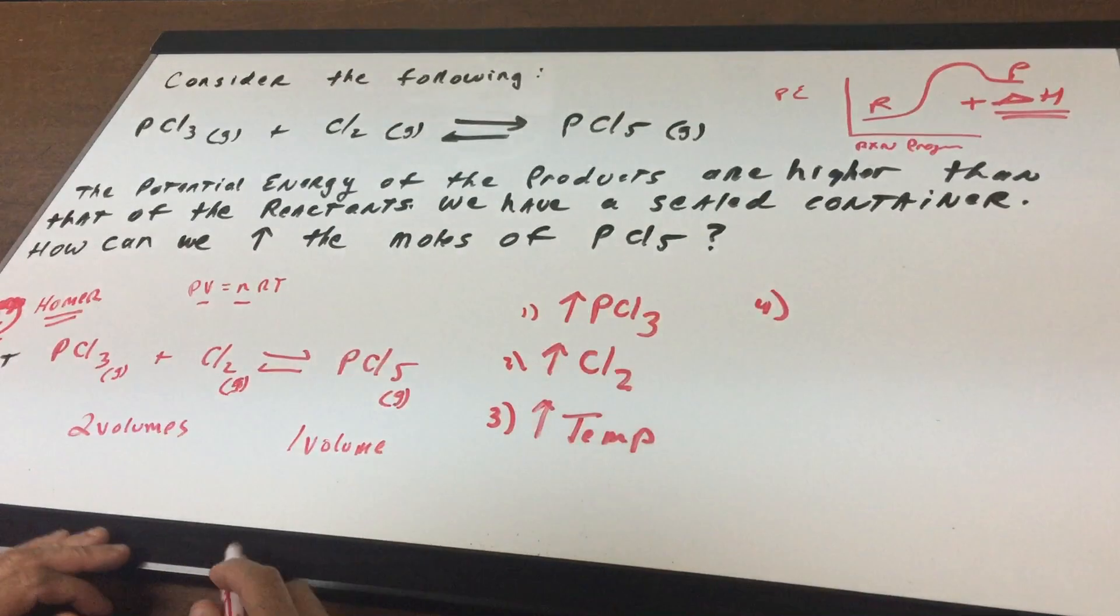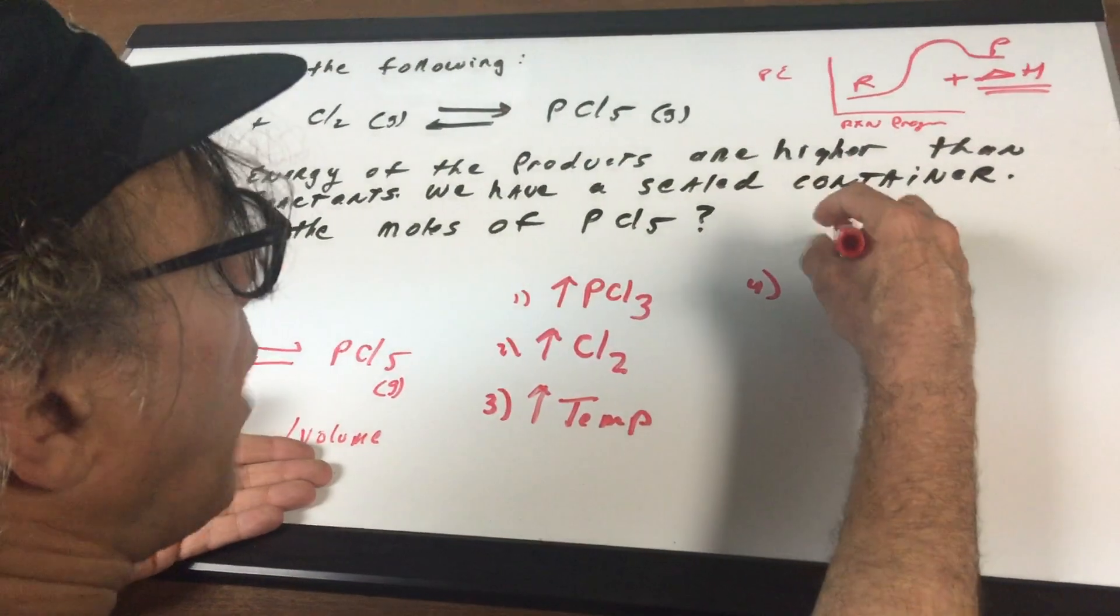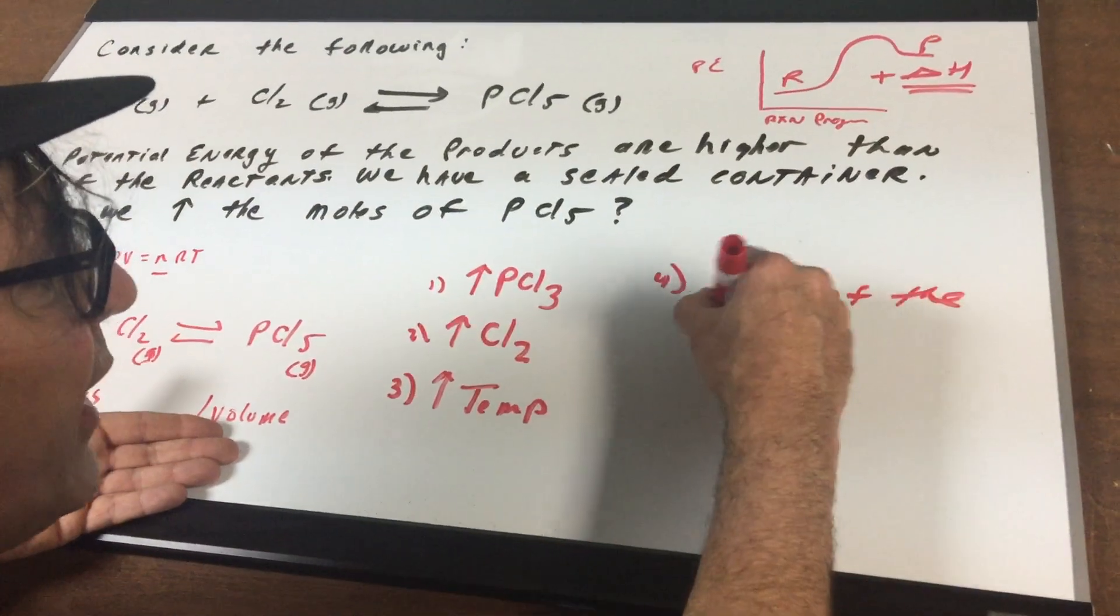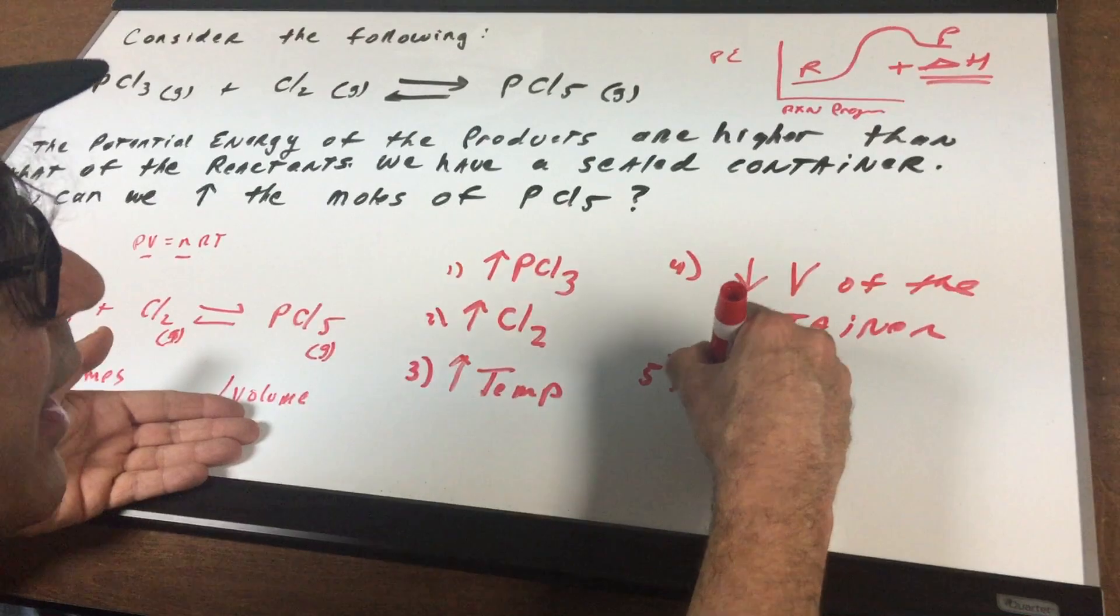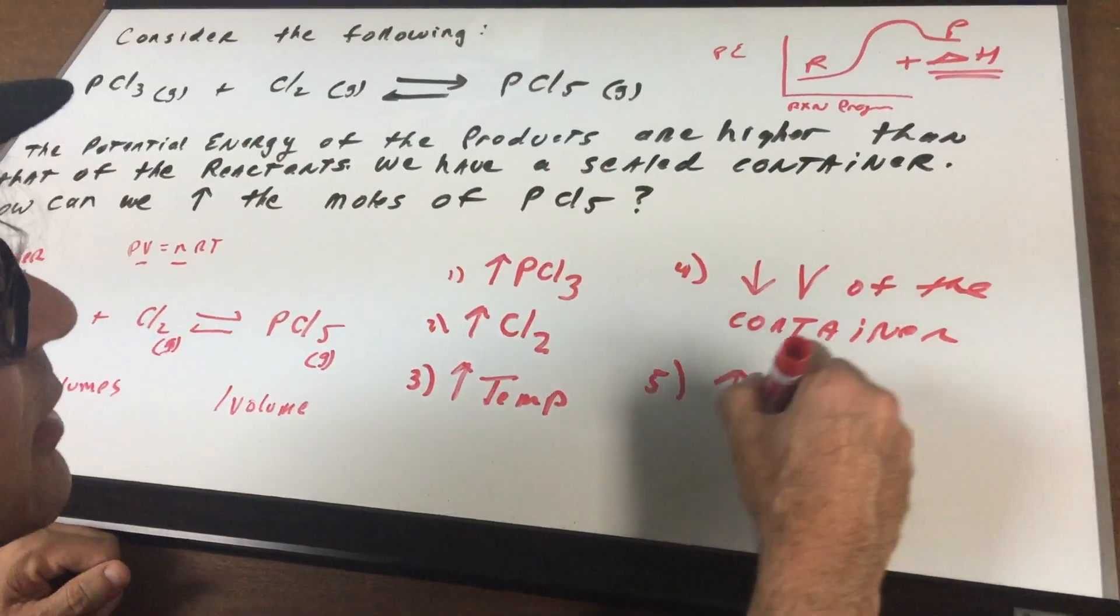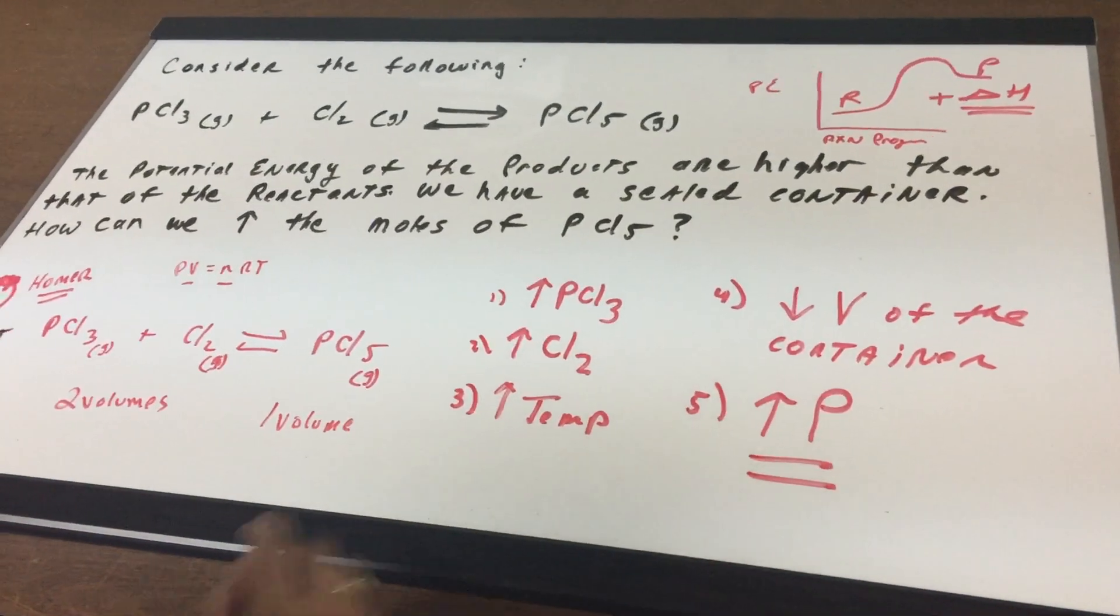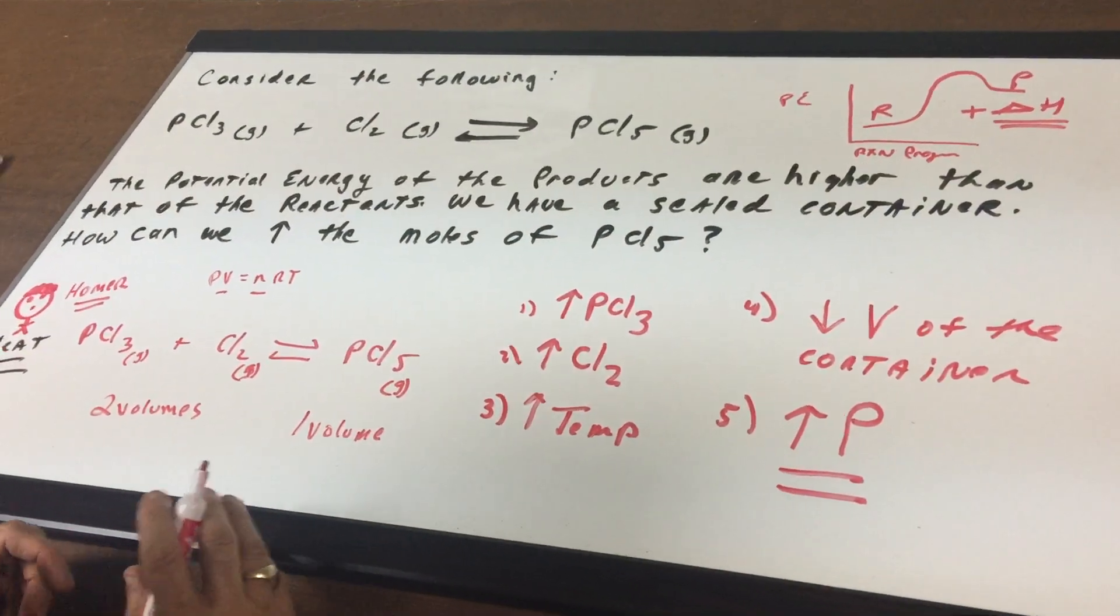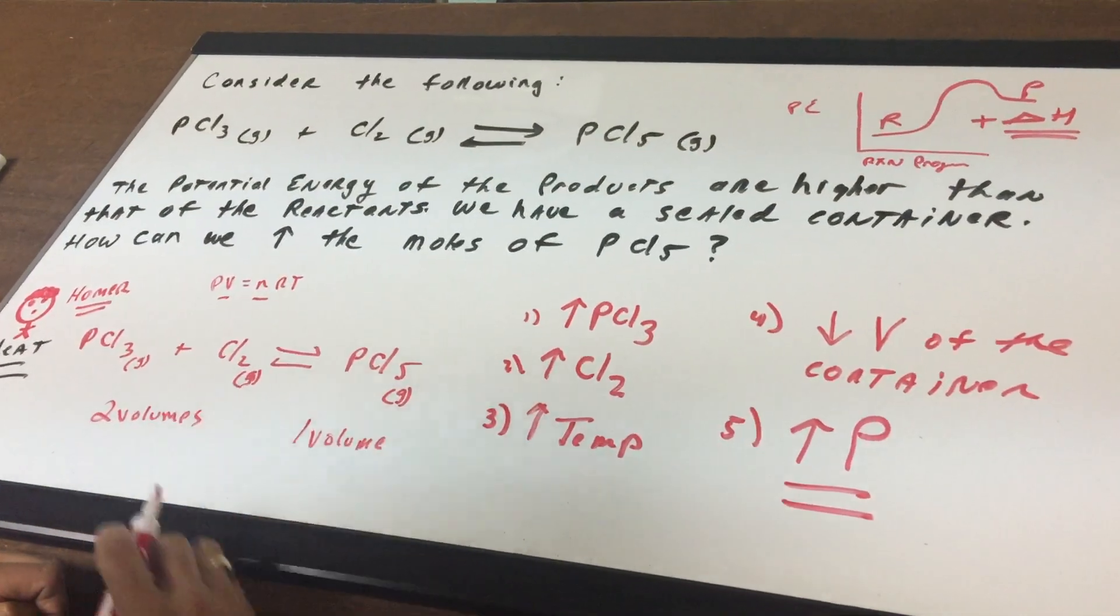Another thing I can do is I want to move the system towards lower volume. So I can simply say decrease the volume of the container. Another way to say decreasing the volume of the container is simply what? Increasing the pressure on the system. So I can increase pressure, decrease volume of the container, increase temperature, and increase any of the reactants. And all of these will be ways that I could move this equilibrium to the right side and maximize my product.